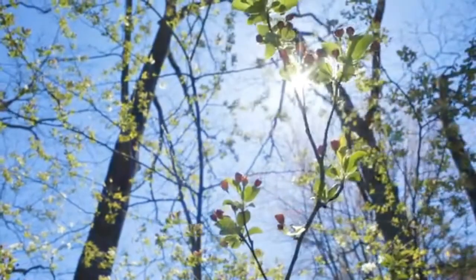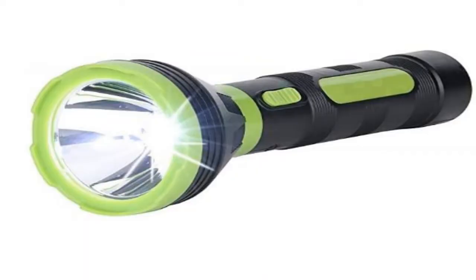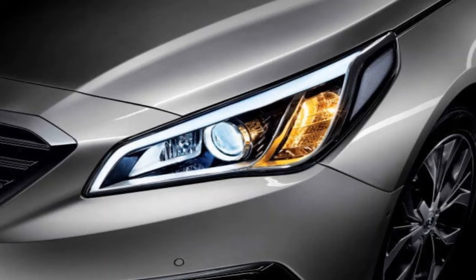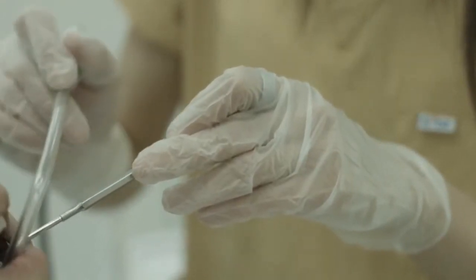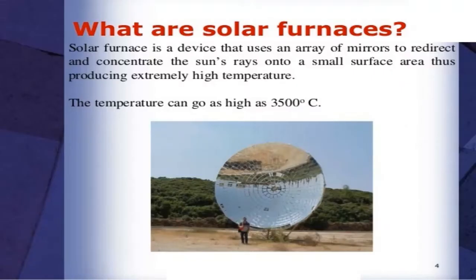Now let us discuss some uses of the concave mirror. It is used in torches, searchlights, and vehicle headlights to get powerful parallel beams of light. They are often used as shaving mirrors to see a larger image of the face. Dentists use concave mirrors to see large images of the teeth of patients. Large concave mirrors are used to concentrate sunlight to produce heat in solar furnaces.